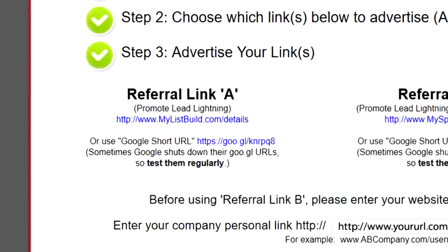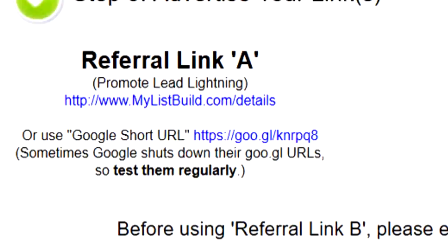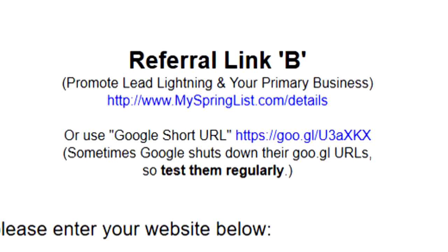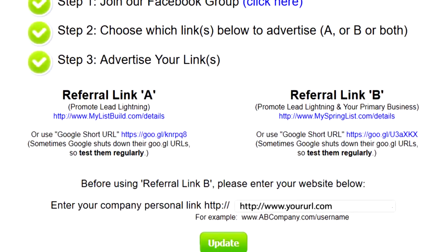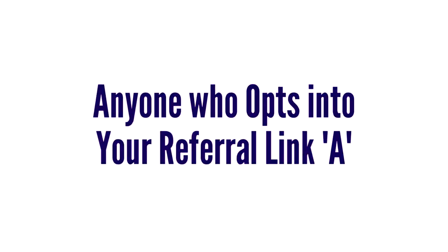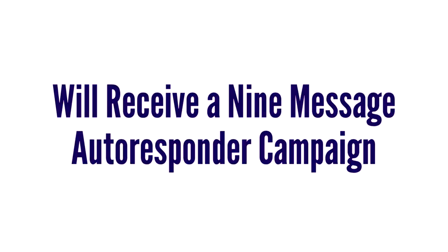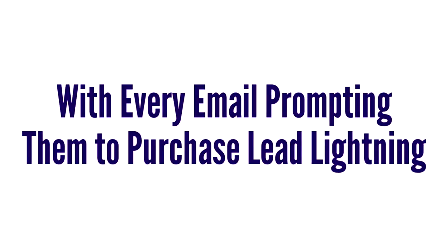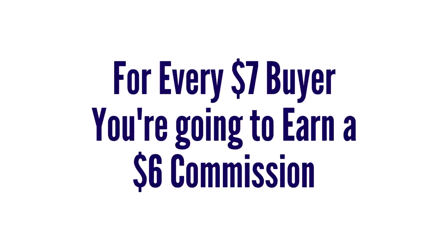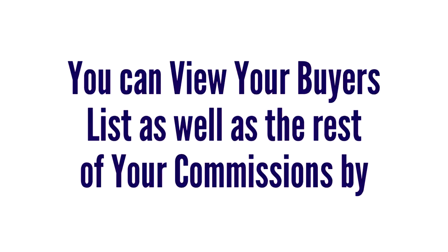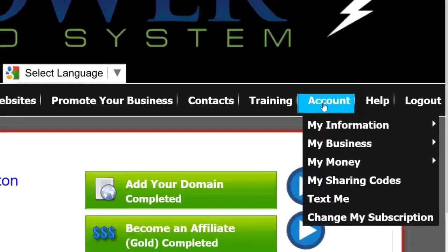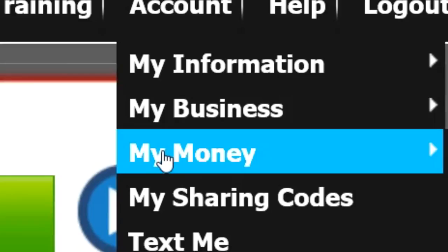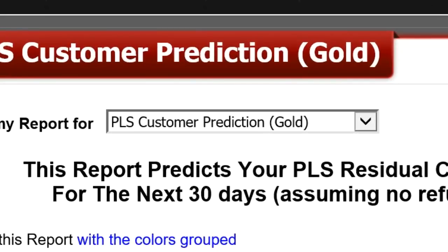Step 2 is to choose which link you wish to advertise — referral link A or referral link B. These are your personal links. Referral link A and B are identical funnels, with the only difference being the autoresponder campaign. Anyone who opts into your referral link A will receive a nine-message autoresponder campaign, with every email prompting them to purchase Lead Lightning. For every $7 buyer, you're going to earn a $6 commission. You can view your buyers list as well as the rest of your commissions by hovering over Account, then clicking on My Money.